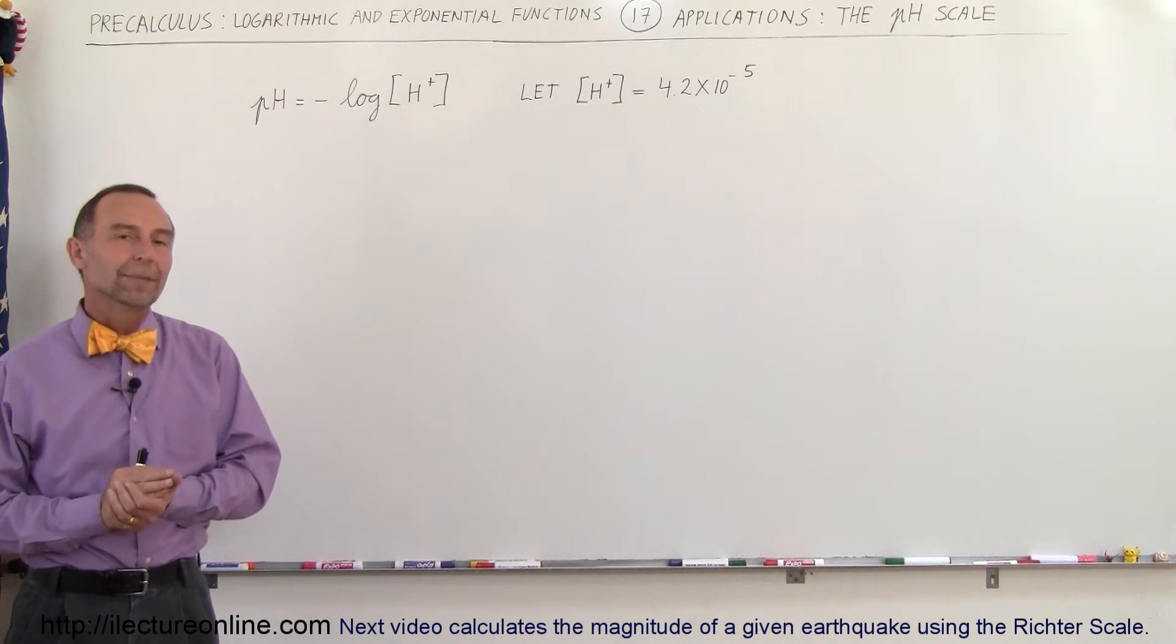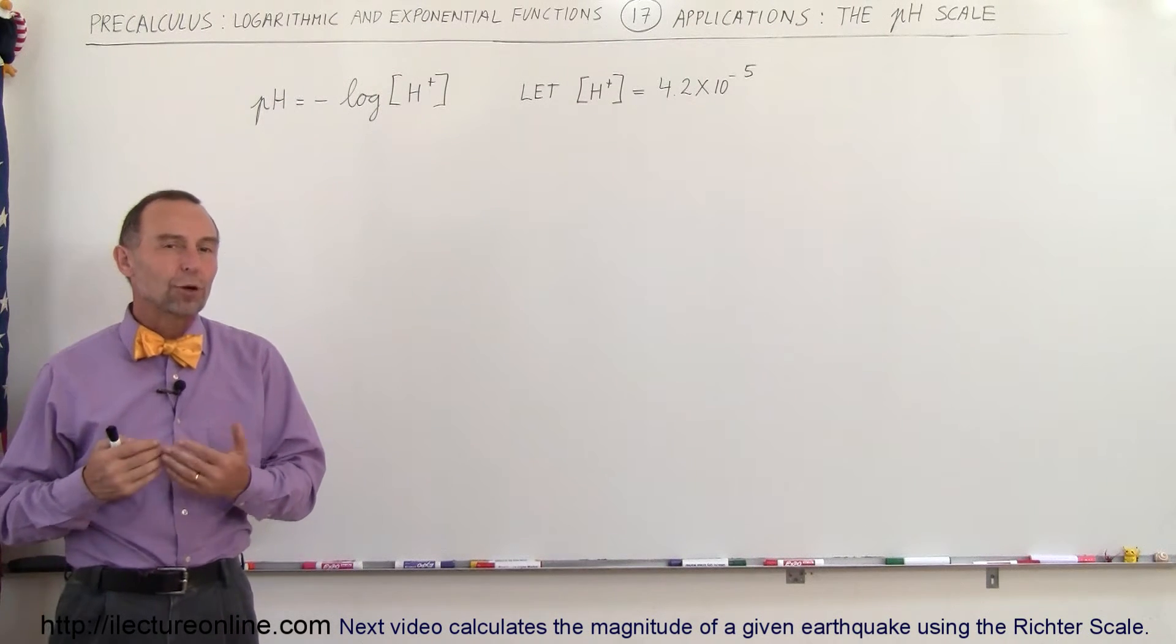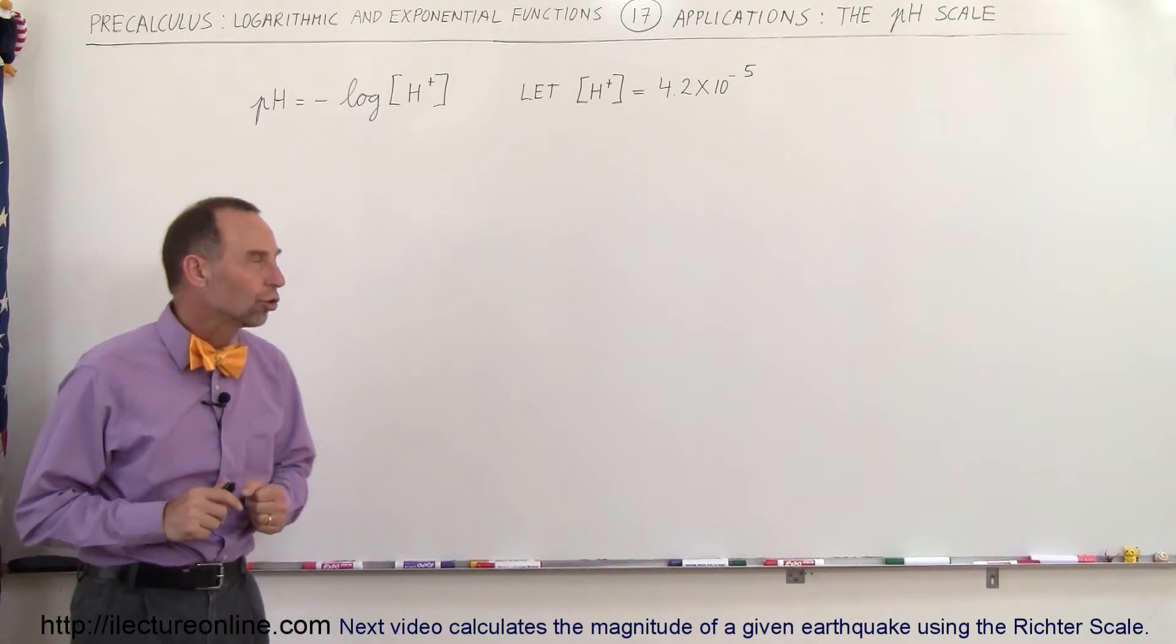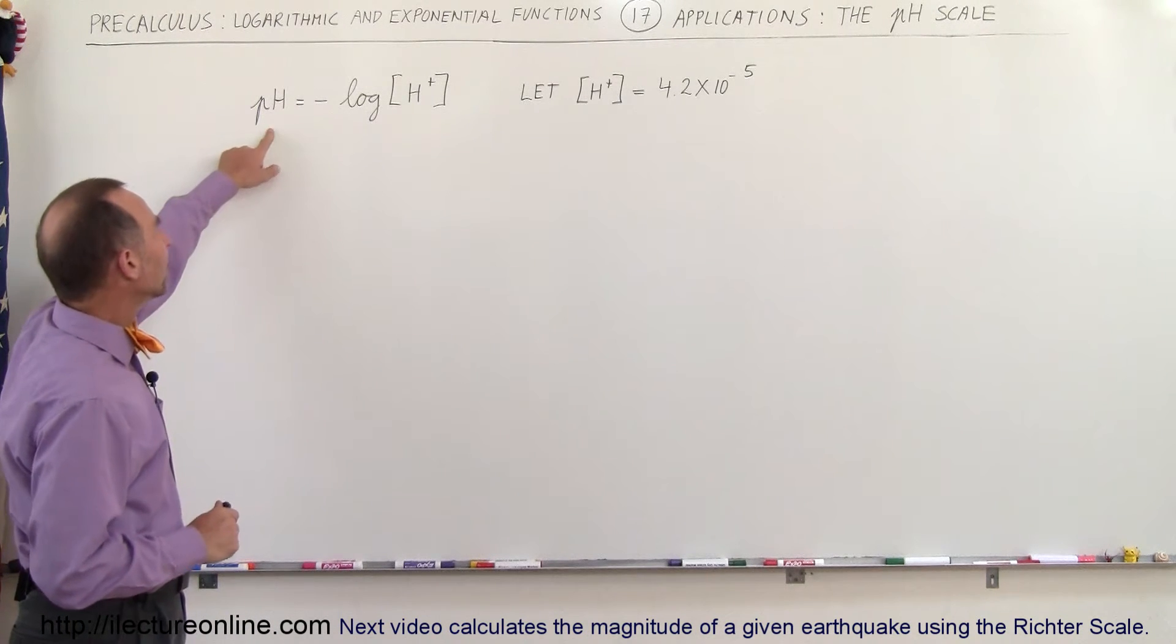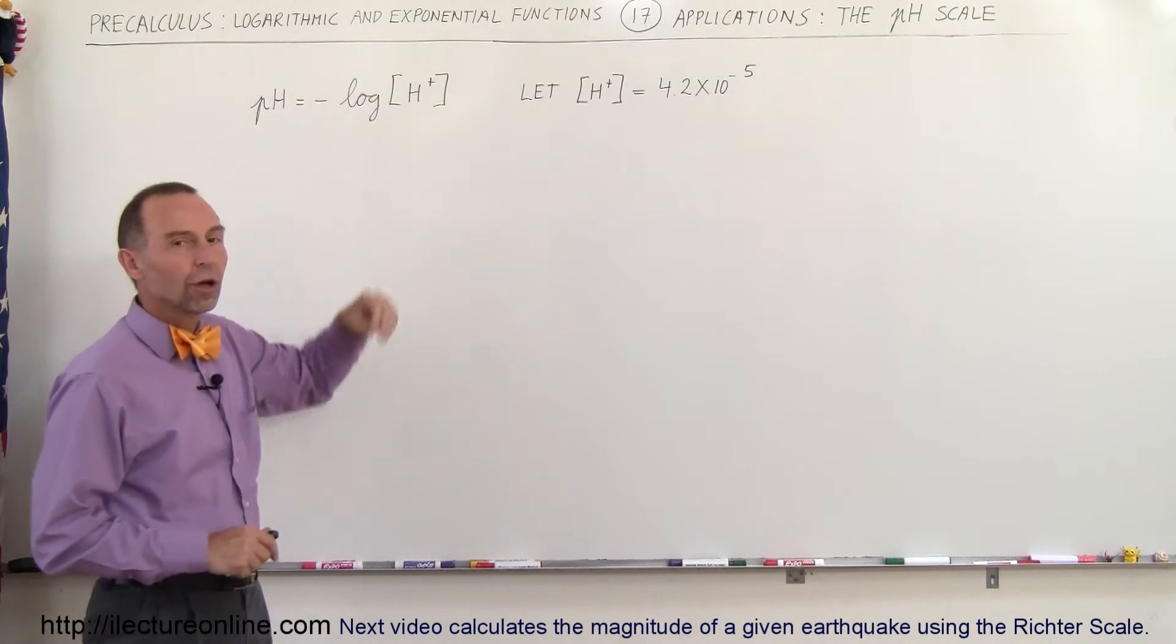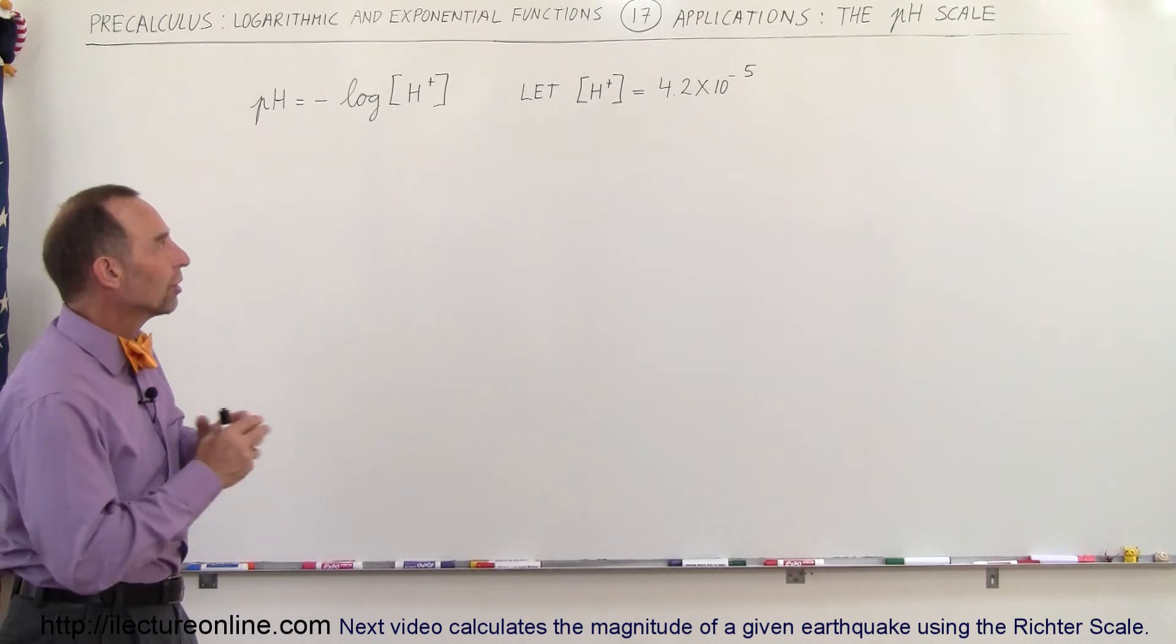Welcome to ElectronLine. In chemistry we have what we call a pH scale that indicates how acidic or basic a solution is. The pH can be calculated by taking the negative log of the concentration of the hydrogen ion concentration in the solution.